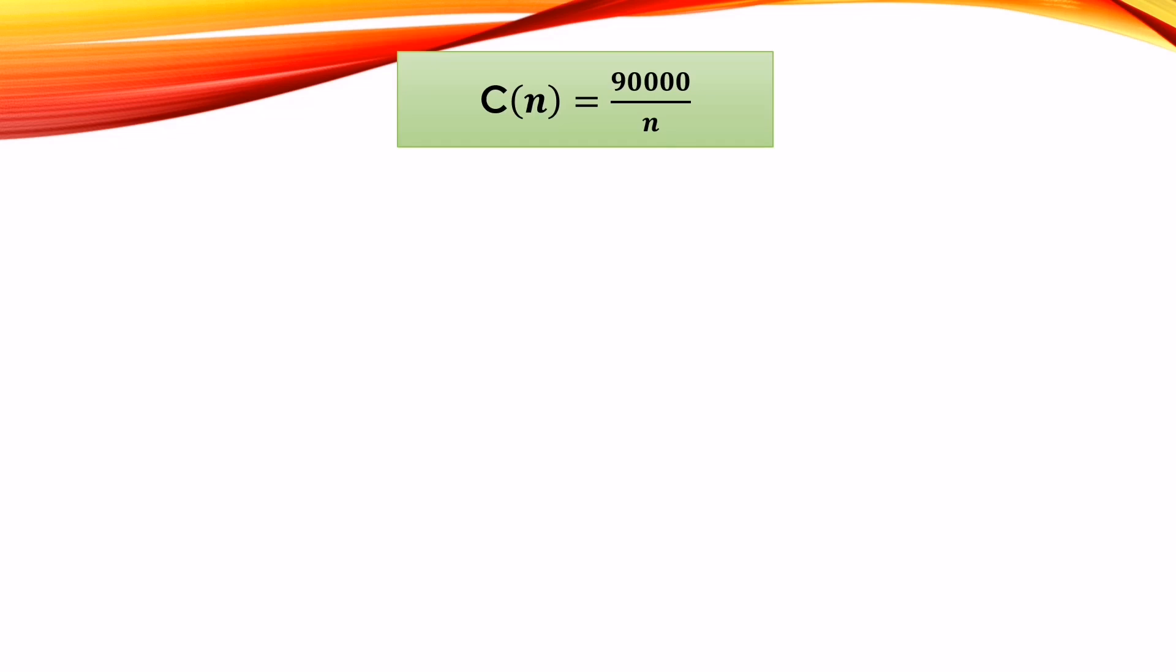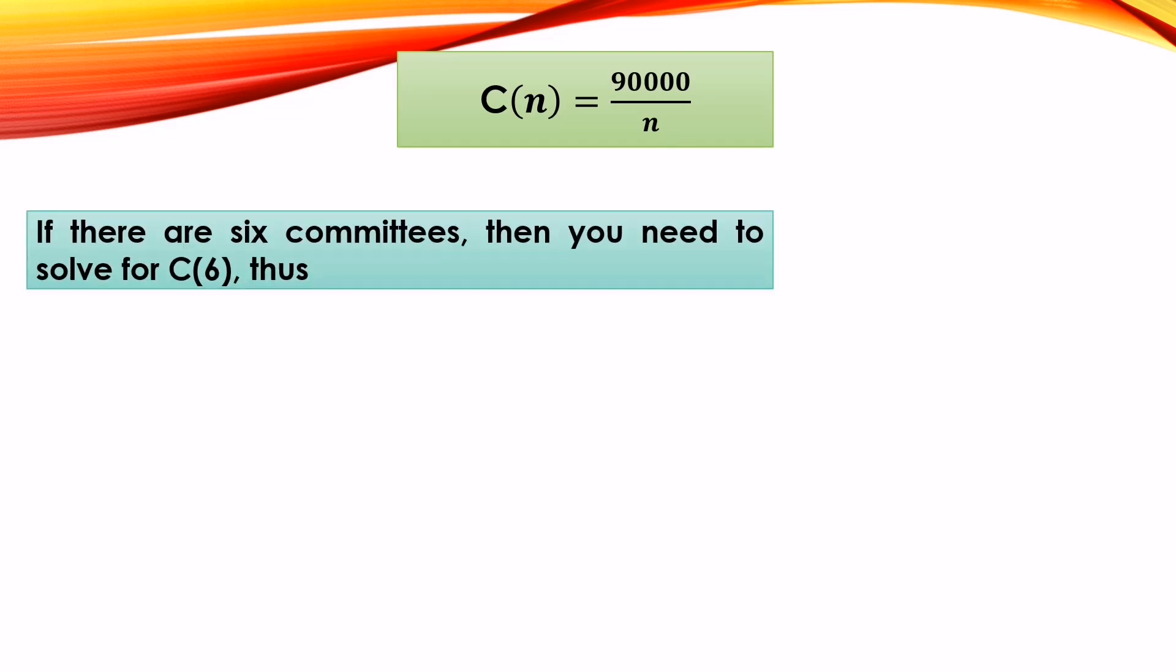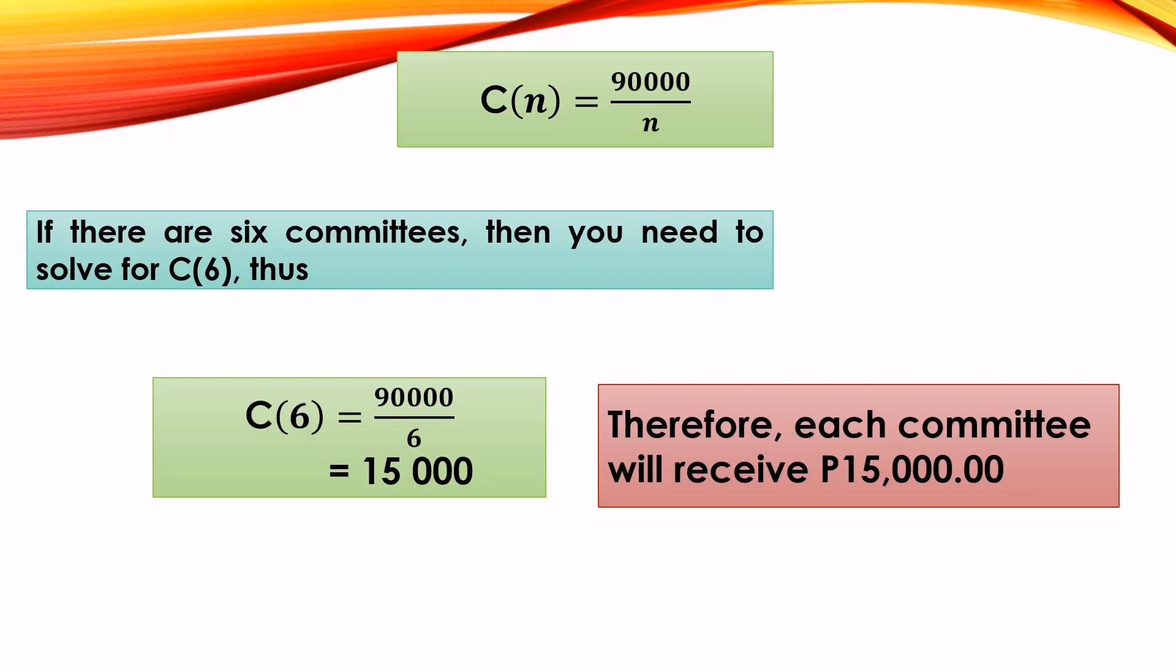So again, this is our function: C(n) equals 90,000 over n. If they have six committees, then you need to solve for C(6). Our value of n is six. So C(6) is equal to 90,000 divided by 6, which equals 15,000. So each committee will receive 15,000 pesos.